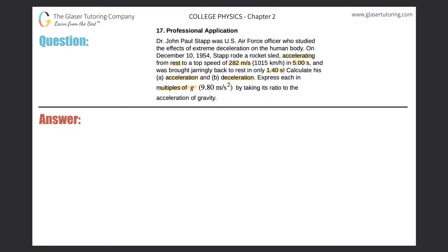So let's just draw a quick sketch. Here's the start of the problem — this guy is going to accelerate from rest to a top speed of 282 meters per second. So the velocity at the start, his initial velocity, was zero meters per second because he's starting off. The velocity at the end, the final velocity for this part, would have been 282 meters per second. In order for him to change his velocity by this magnitude, it took 5.00 seconds.